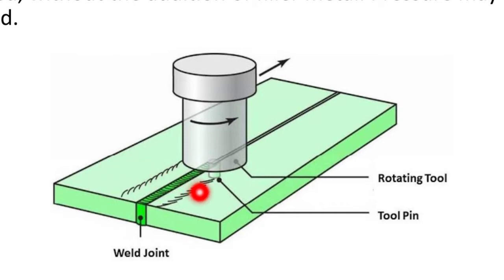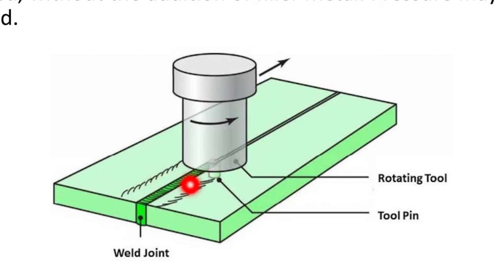In friction stir welding, if you want to join two plates, you align them and then a rotating tool comes and rotates against the surface, causing friction between the two plates. That heat is utilized for heating the plate and then it gets joined together. The important point is that the material does not melt in this process.